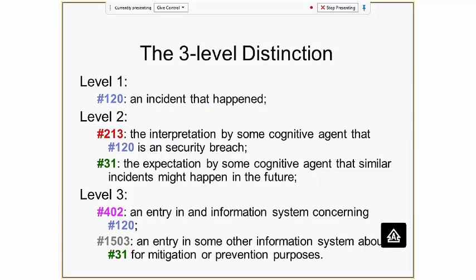An example of level one would be something that happened. An example from level two would be an interpretation of that something — say, incident number 120 — interpreted as a security breach. That's somebody's idea; some analyst in a room sees an incident and interprets it as a security breach. Level three is an entry in an information system, logbook, or diary about number 120, expressing what some cognitive agent believed about it.